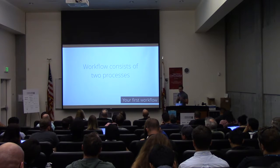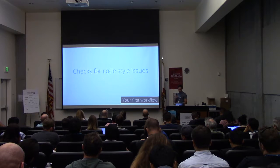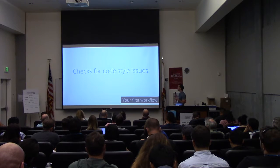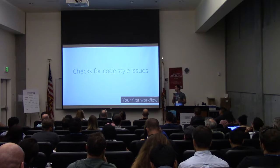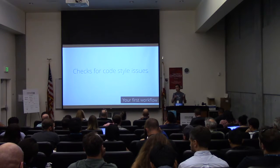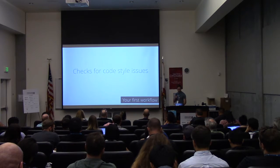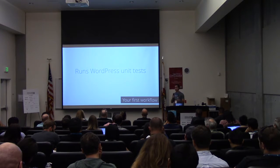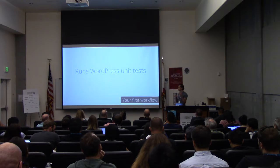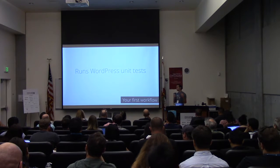So what do you get with that workflow? It consists of two processes. The first checks for coding issues — are you coding to the WordPress coding standards? If not, it generates errors and tells you. Then it will run the WordPress unit tests that were generated. Once you get your skeleton and start writing tests, if somebody pushes a code change that breaks a test, it will tell you.